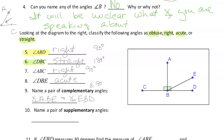How about a pair of supplementary angles? One example would be angle CBA and angle ABD. Another example could be angle CBE and angle EBD. So those are two pairs right there.